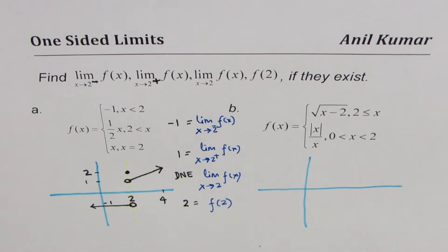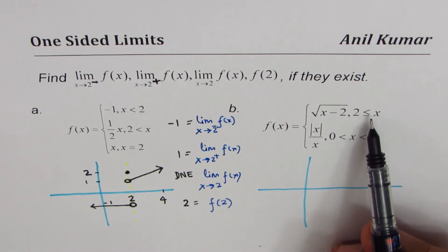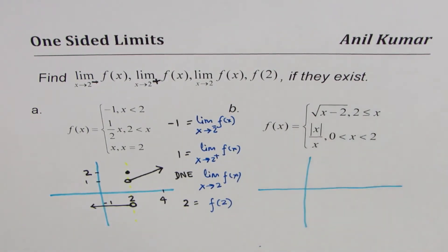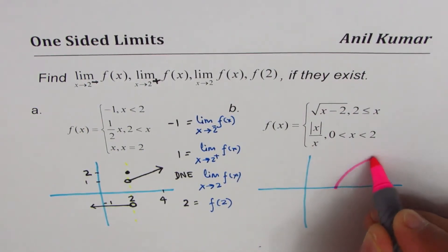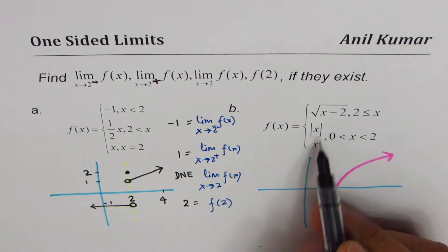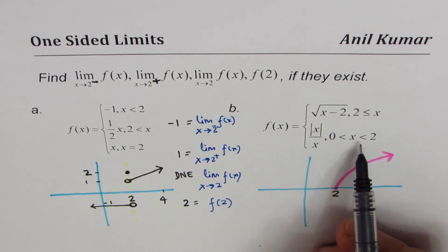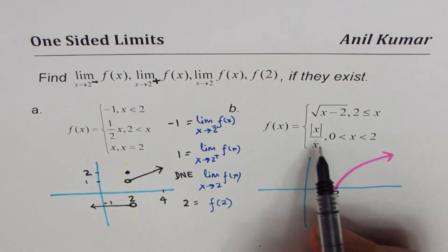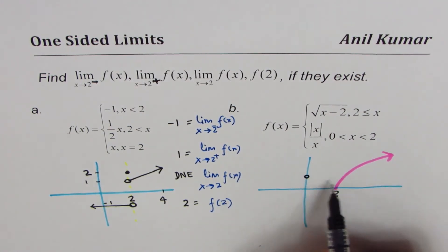Now let's look at the second example. The function f(x) equals the square root of (x - 2) when x is greater than or equal to 2 — that's the square root function translated 2 units to the right. The other piece is |x|/x when x is strictly between 0 and 2. In that interval, |x|/x always equals 1, so that piece is the horizontal line y = 1.